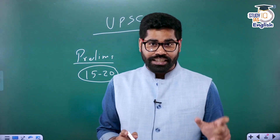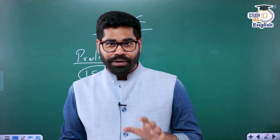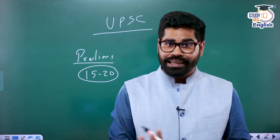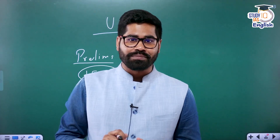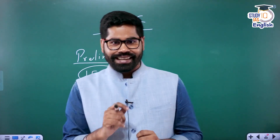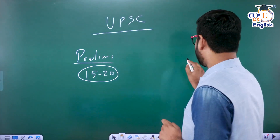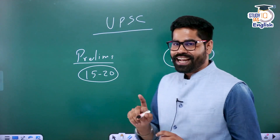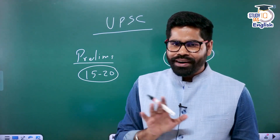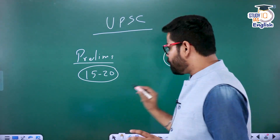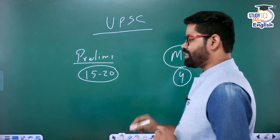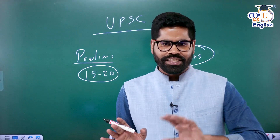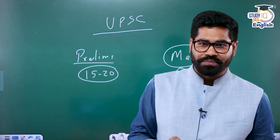On an average you will find that 15 to 20 questions are coming from the science and tech section. So this is a great number. If you have prepared well for the science and tech section, you can be sure of at least 15 questions in the prelims examination. Similarly, if we look at the main examination section, we have on an average 4 questions from the science and tech section each year.